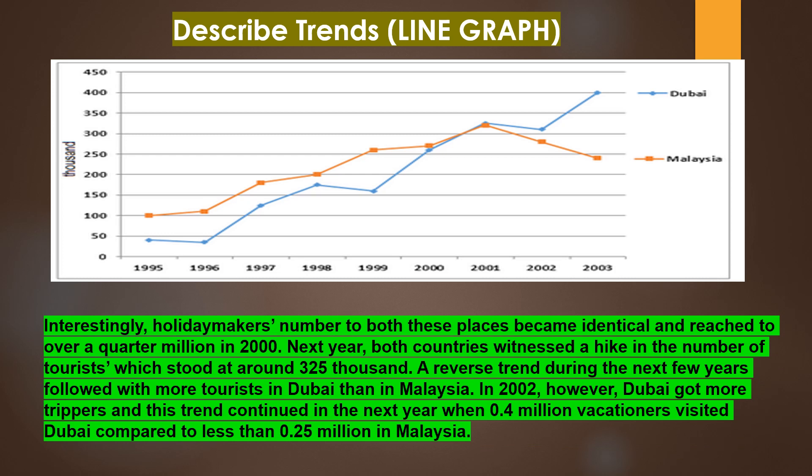Interestingly, holidaymakers to both these places became identical and reached over a quarter million in 2000. The next year, both countries witnessed a hike in the number of tourists, which stood at around 325,000. A reverse trend during the next few years followed, with more tourists in Dubai than in Malaysia in 2002. Dubai continued to get more visitors, and this trend continued in the next year when 0.4 million vacationers visited Dubai compared to less than 0.25 million in Malaysia.